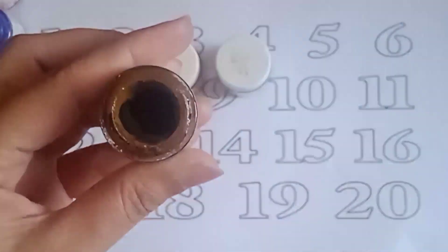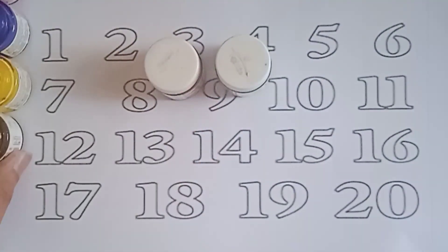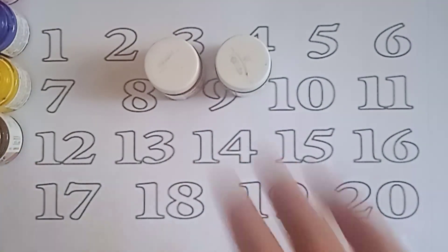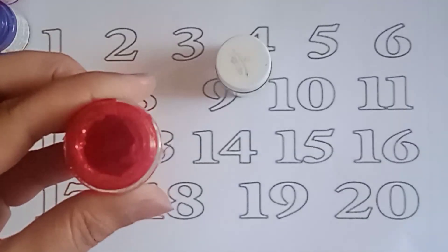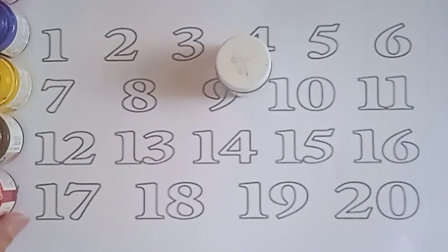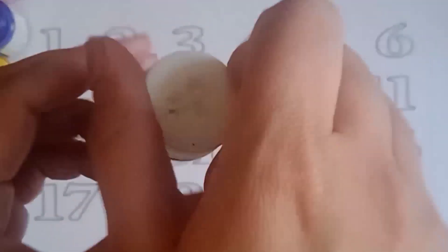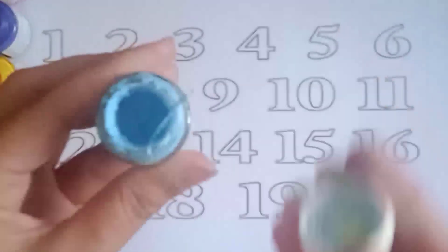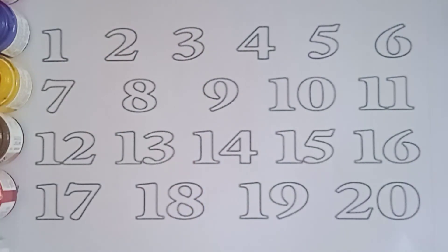And this one is brown color. And next color is — let's see — it's a red color. And last one is sky blue color. Now let's start writing 1 to 20.